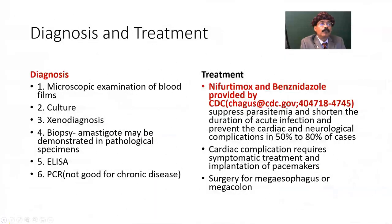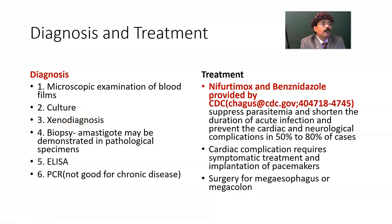How can you diagnose Chagas disease? Microscopic examination of the blood film — preferably the buffy coat of the hematocrit — using thick film and thin film to identify the organism. Culture in specific media. Xenodiagnosis: an uninfected vector bug is allowed to take blood from the suspected infected person, and later that insect is dissected to find any evidence of Chagas organisms.